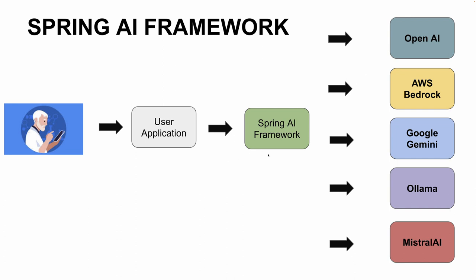For example, if you use Spring AI, you can configure the API key. If you log in with payment information, you can easily integrate with OpenAI. So if you use Spring AI Framework, you can use a template or a wrapper — you can provide that through Spring AI.